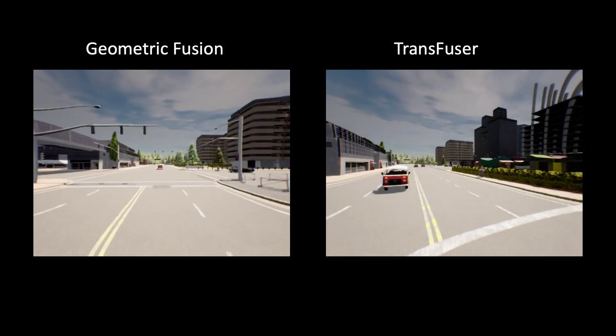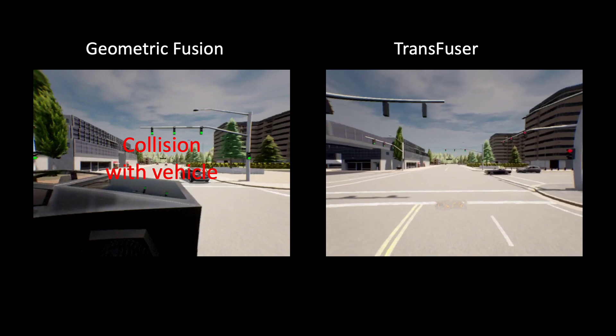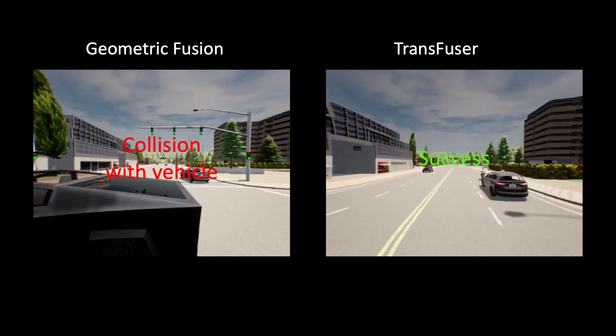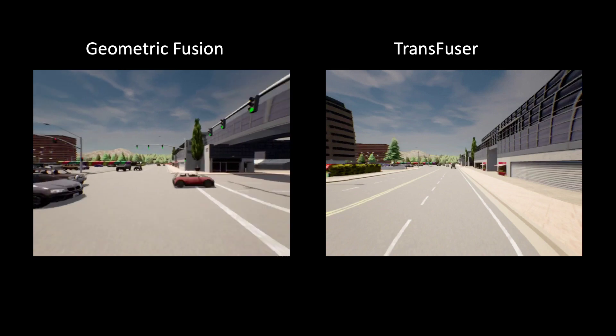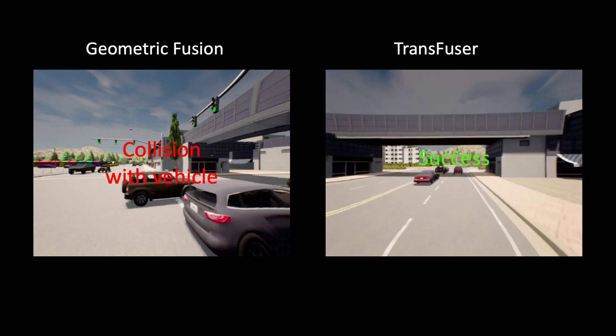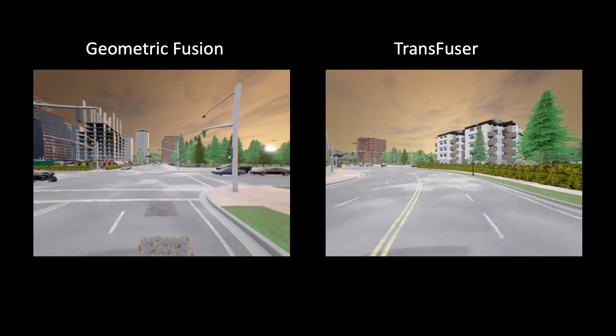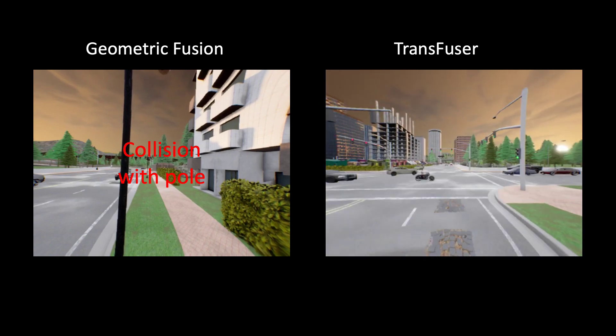Next, we compare our Transfuser model with geometric fusion in different settings. First, we show results on generalization to a new town. In this scenario, geometric fusion collides with the vehicle coming from the right, whereas our Transfuser model stops the vehicle and is able to safely cross the intersection. This is another example of dense traffic at an intersection. We also show results on generalization to three new weather conditions: dawn, twilight, and night. We observe a similar trend as before — geometric fusion often ends up colliding with vehicles and static objects such as poles, whereas Transfuser is able to successfully navigate the intersection.